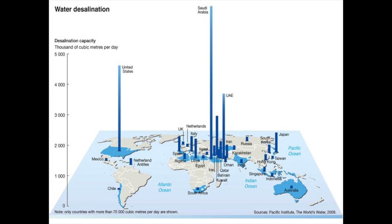This chart depicts the current uses of desalination plants. As you can see, several countries utilize these plants as a solution to the issue of a shortage of safe drinking water. 60% of the currently operating desalination plants are located in the Middle East and North Africa.